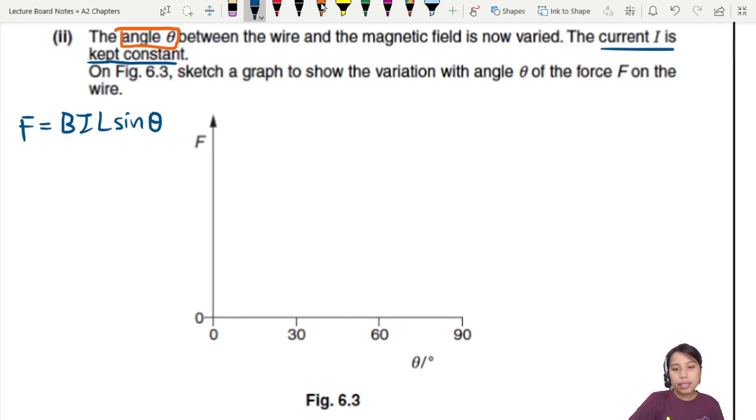So this will be F and then there's θ here. Let's draw this whole thing. BIL, are all those constants? B is constant, current is fixed, length is still the same. So this is all locked in. All that you have left is F proportional to sin θ. How to draw this graph?